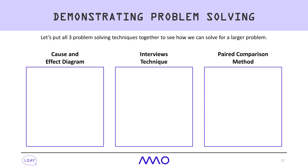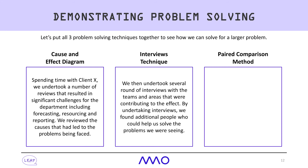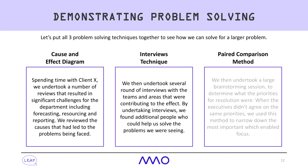Demonstrating problem solving using all three techniques: working with a large banking client, we undertook a number of reviews that revealed significant challenges in all aspects of project management, including forecasting, resourcing, and reporting. We used the cause-and-effect diagram to detail the causes challenging the department. We then used the interview technique to gather information, identifying key priorities. Finally, using the paired comparison method in brainstorming sessions with executives, we identified what to focus on.